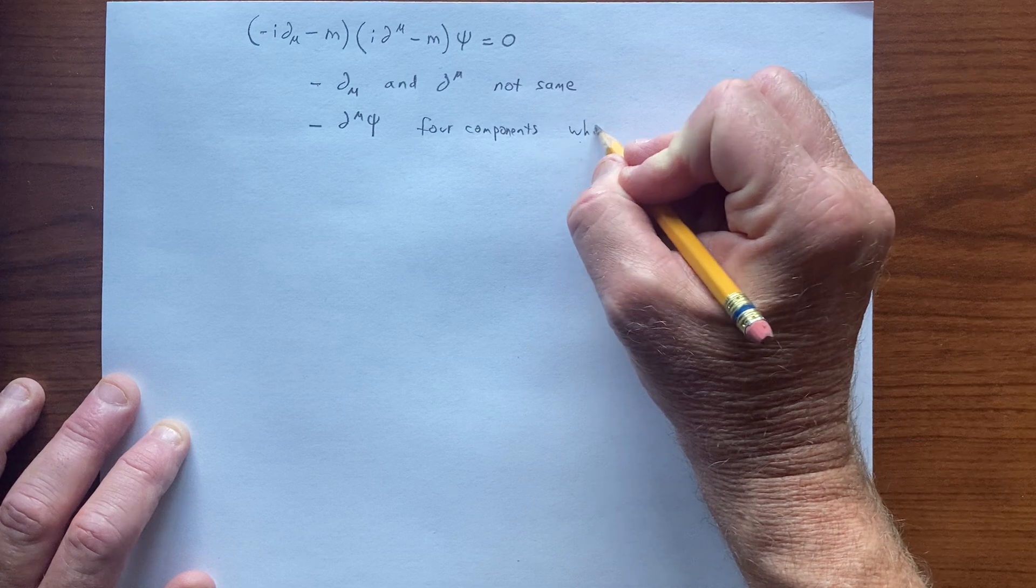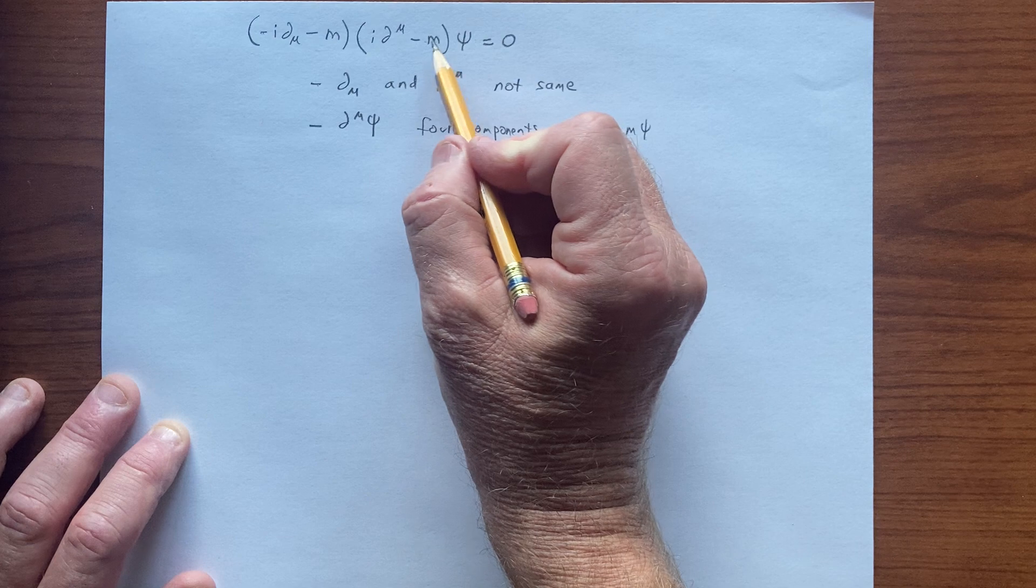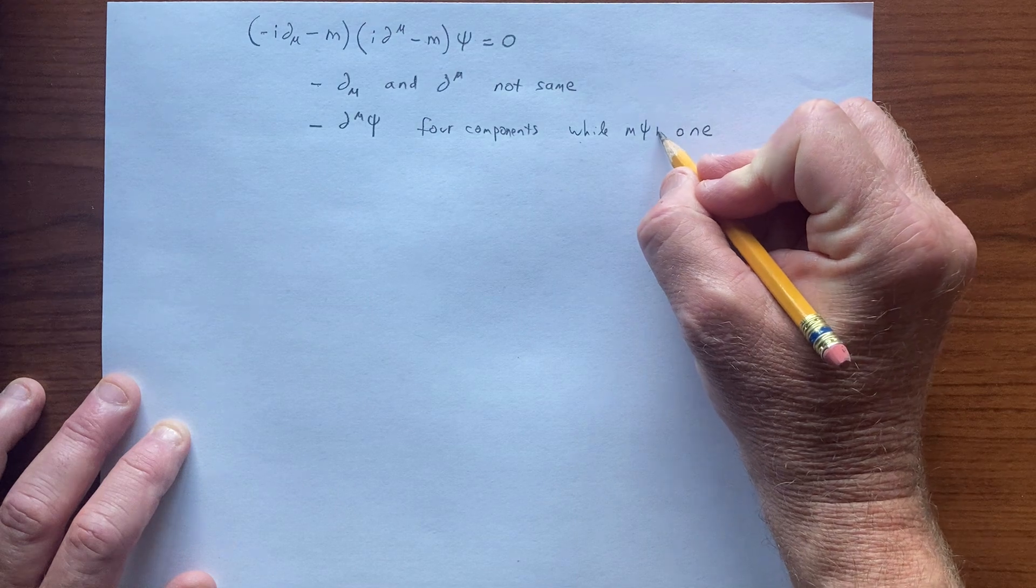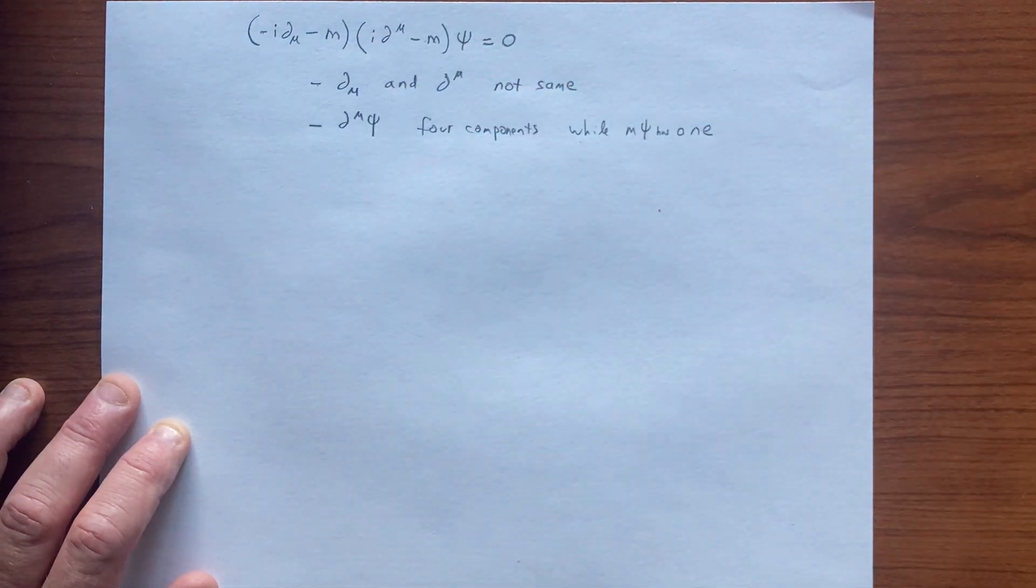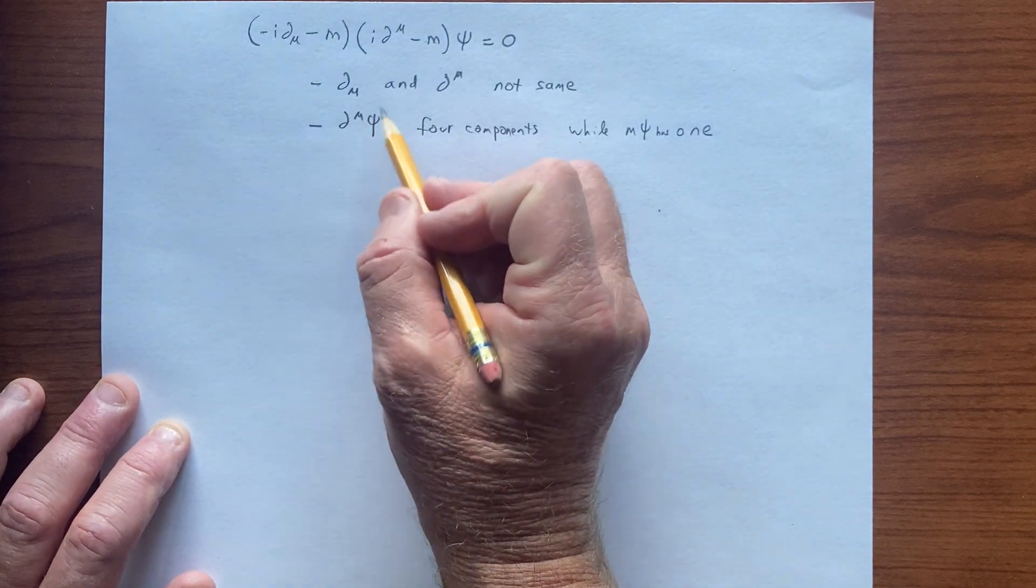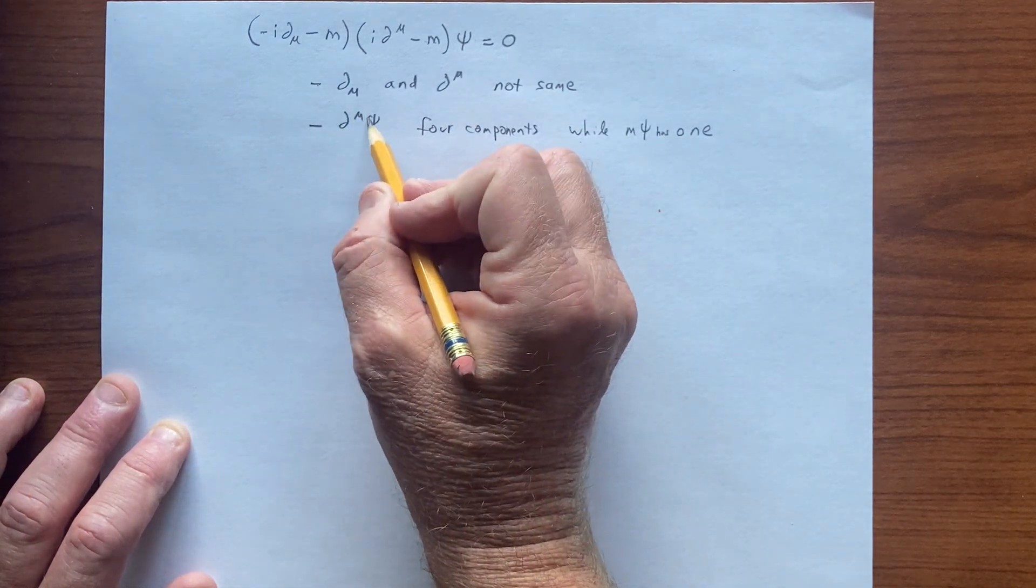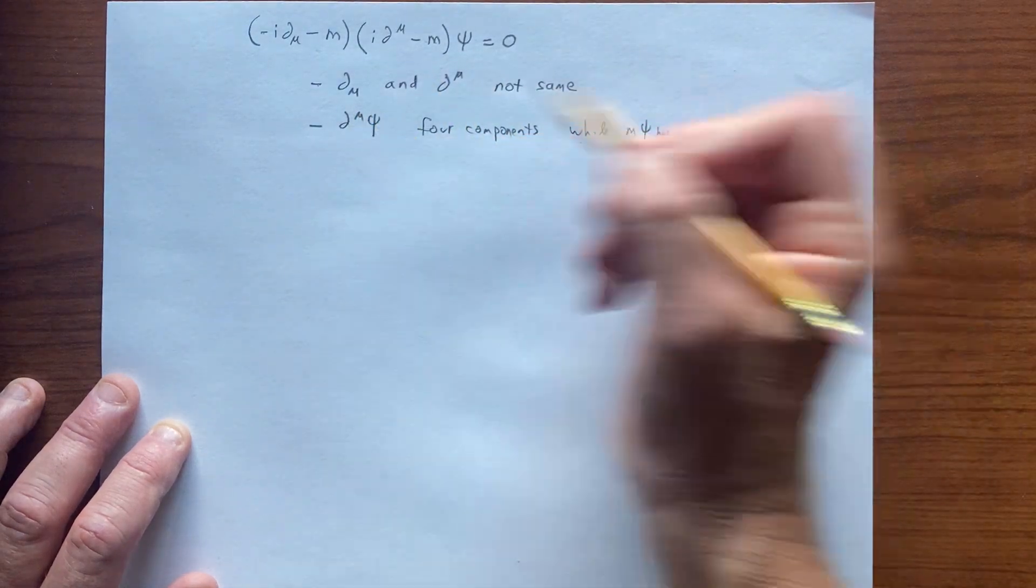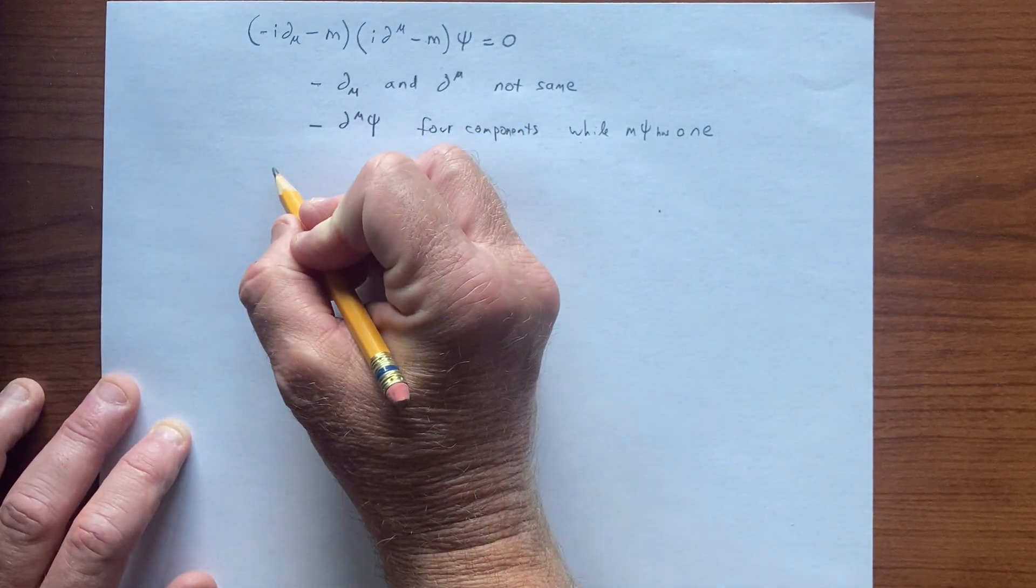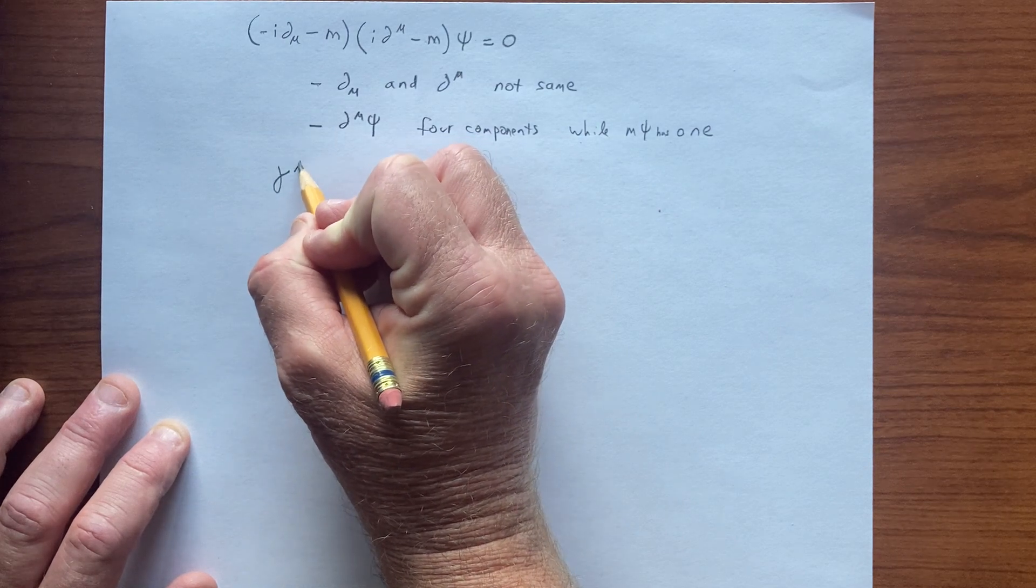While the other term in the same equation—m has one. So they're not on the same footing, and that sort of suggests a quick fix, because to go from this kind of a thing to something that has only one component, we do a generalized dot product. So we're led naturally to contemplate using some object with four components.